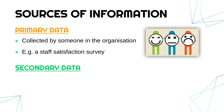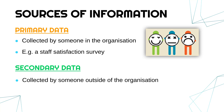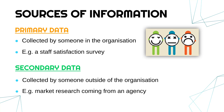Secondary data is going to be collected by somebody outside of your organization, so you're relying on them having done things properly. That's when an element of uncertainty can come into it, because you're trusting they're going to have collected it without any bias and that it's going to be accurate — you can't tell that directly.